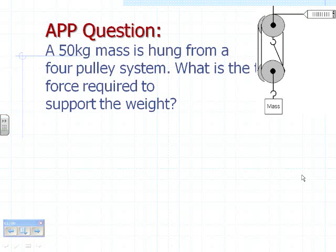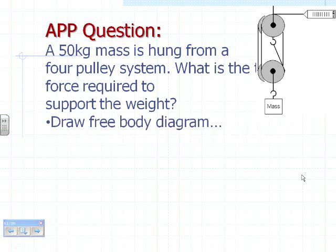So here's a sample pulley system. And the question is, what is the force required to support the weight of a 50 kilogram object? Step one, draw a free body diagram. Well, you've got the weight of the mass hanging downward. So you're going to have mg downward. And then the string looks like it's pulling up in four places. So you're going to have tension times four up.